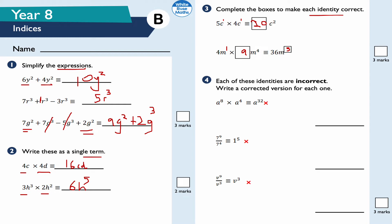Question number four: each of these identities is incorrect — write a corrected version. a to the 8 times a to the 4 is not a to the 32, because you don't multiply the powers — you add them when the base is the same. So 8 plus 4 is 12: the correct answer is a to the 12.